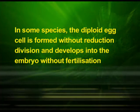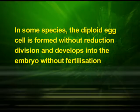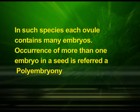In some species, the diploid egg cell is formed without reduction division and develops into the embryo without fertilization. More often, as in many citrus and mango varieties, some of the nucellular cells surrounding the embryo sac start dividing, protrude into the embryo sac and develop into embryos. In such species, each ovule contains many embryos. The occurrence of more than one embryo in a seed is referred to as polyembryony.